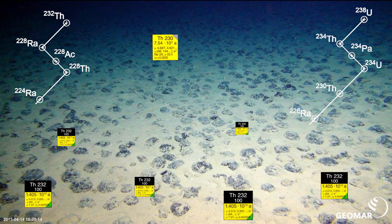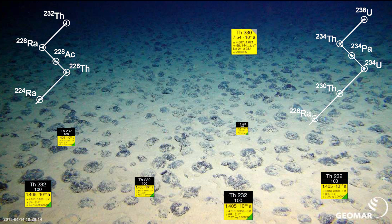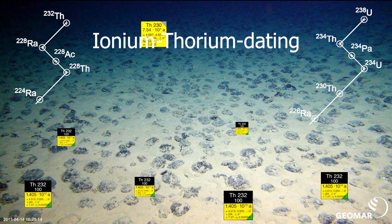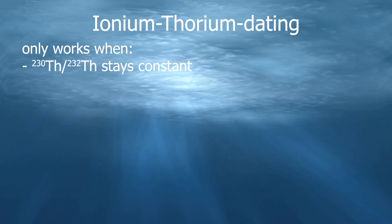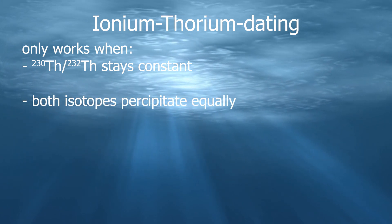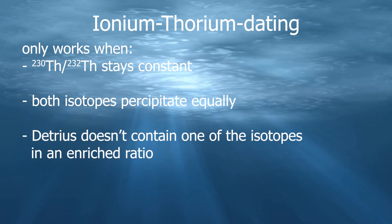Natural thorium-232, which is chemically identical, has always been in the sediment as it practically starts as a water-insoluble compound. By using the ratio of thorium-230 and 232, the age of the sediment can be determined. This dating method is called ionium-thorium dating — ionium being a very old name for the thorium-230 isotope. But this only works if the following criteria are met: the thorium-230 to 232 ratio is constant even in very small amounts, both isotopes precipitate equally, and since they are chemically identical, they should. Any detritus — loose mineral substance from erosion — does not contain either isotope in a deviating concentration.